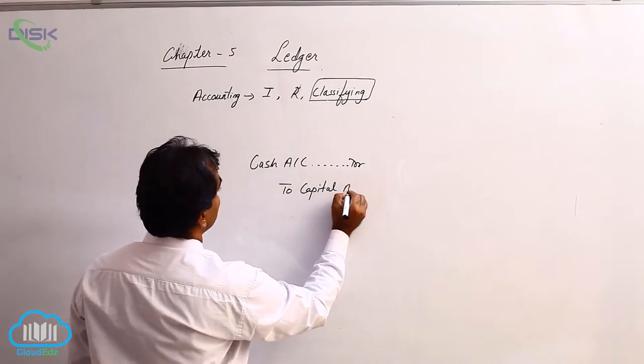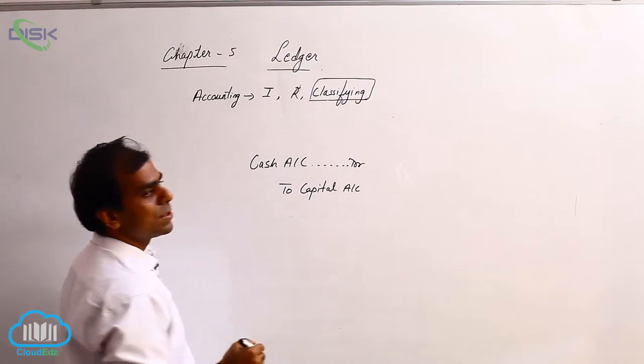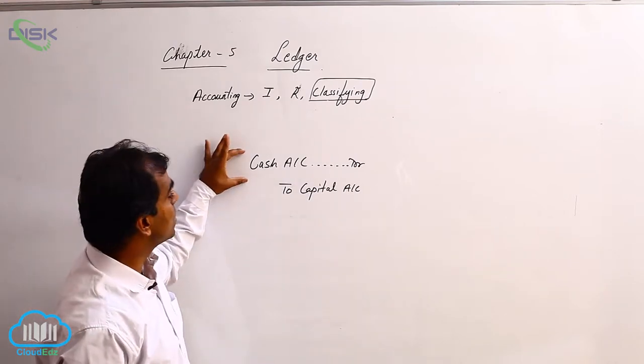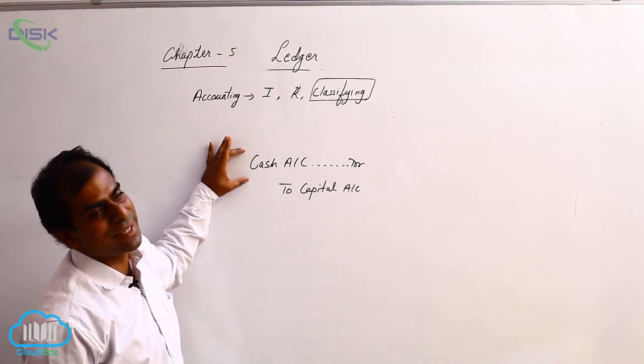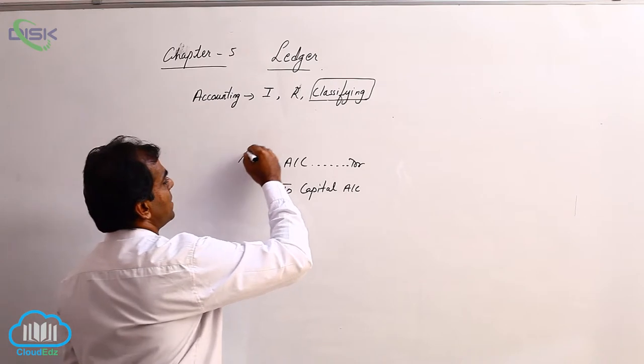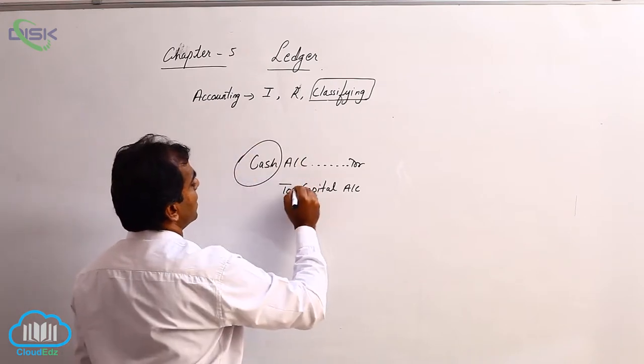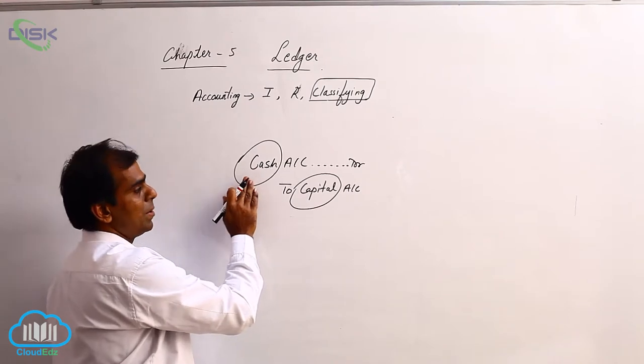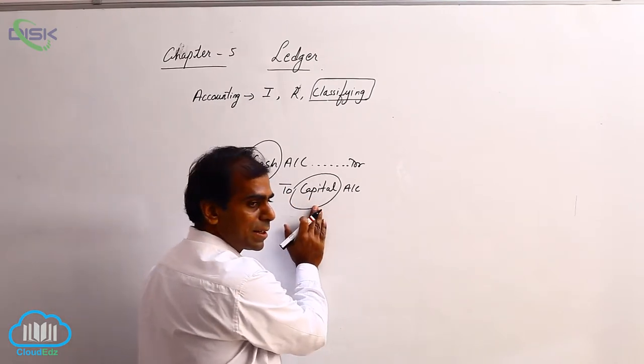So if I have this journal entry, in this journal entry there are two aspects or we say two heads. Simple to understand, two different names. Now these two different names we have identified as one account each. For example we say cash is one account and capital is one account.